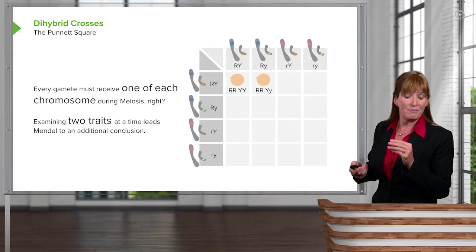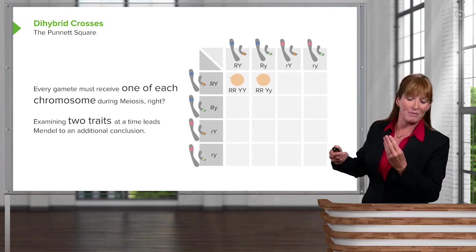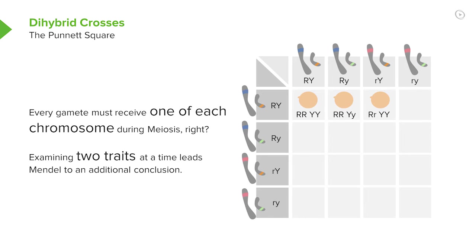The next square over, we have the big R and big Y coming together with a big R and a little y. We have big R, big R, big Y, little y. So on and so forth. We move through the Punnett square, filling in the slots.